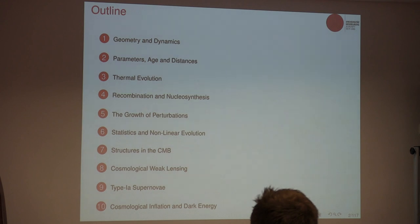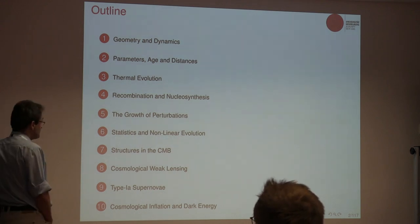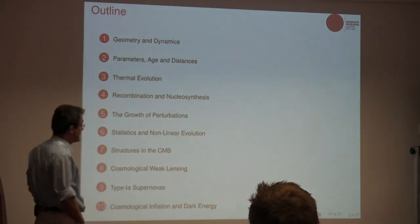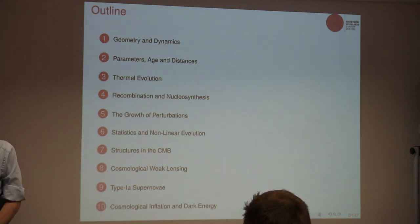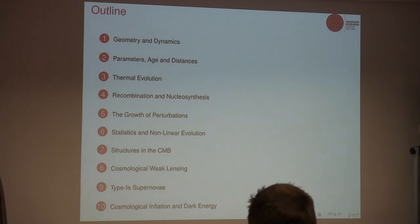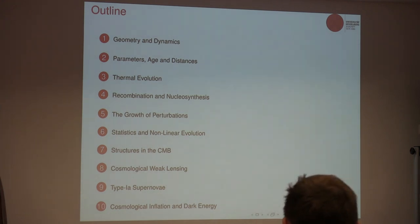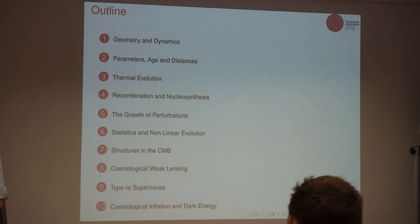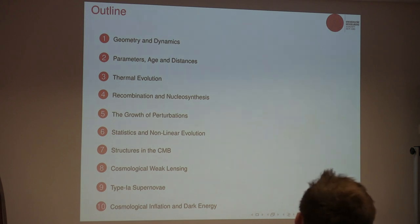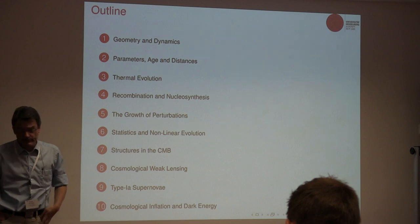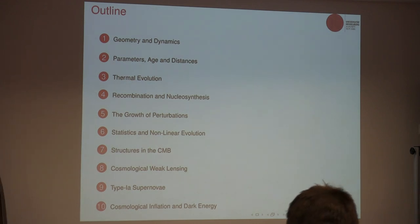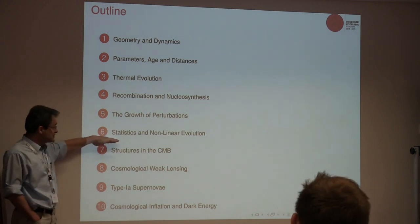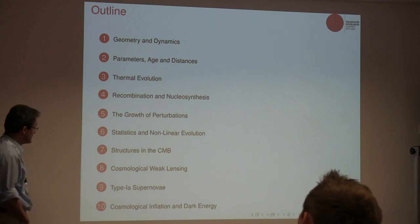Then we speak about recombination and nucleosynthesis — the theory of how the first elements formed and how the universe became transparent. Both events need to be understood very well for us to draw conclusions from cosmological data. Up to point four we speak about the unperturbed, homogeneous universe. From there on we include perturbations, structures, and the origin and evolution of structures in the universe: growth of perturbations, statistics, and non-linear evolution.